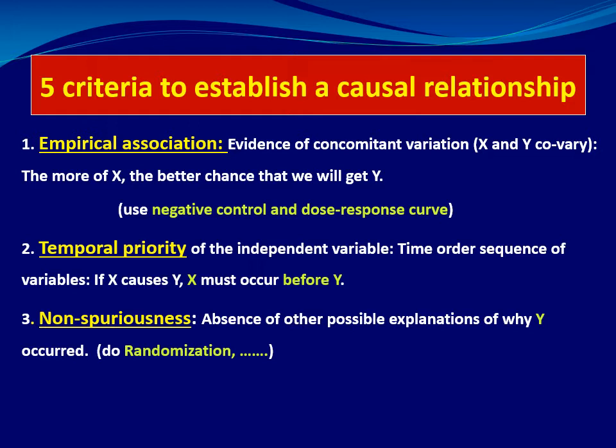The other group has depression plus the drug, which is X. We compare the changes in the behavioral test — the Y variable — between the two groups. We find that when we administer X to the animal, Y will change and improve. Depression symptoms will be improved. So the change in Y — behavioral test or depression symptoms — will occur in the presence of X variable, which is the drug. That's why we use a negative control.